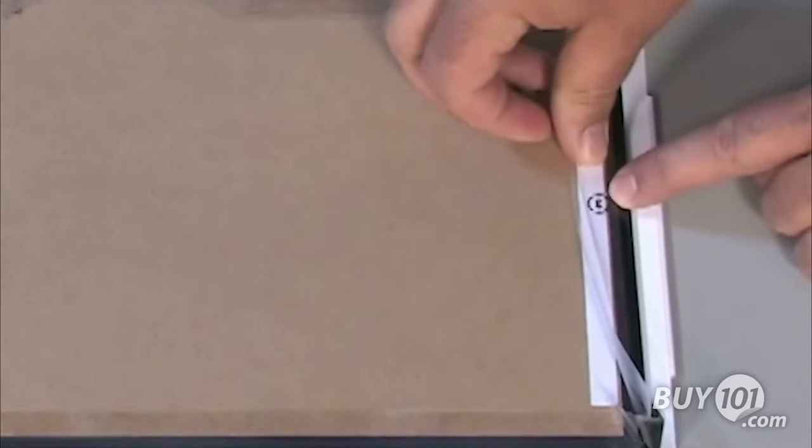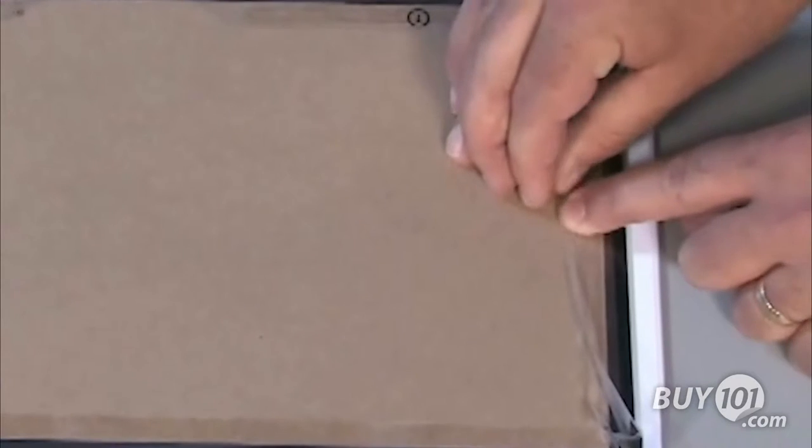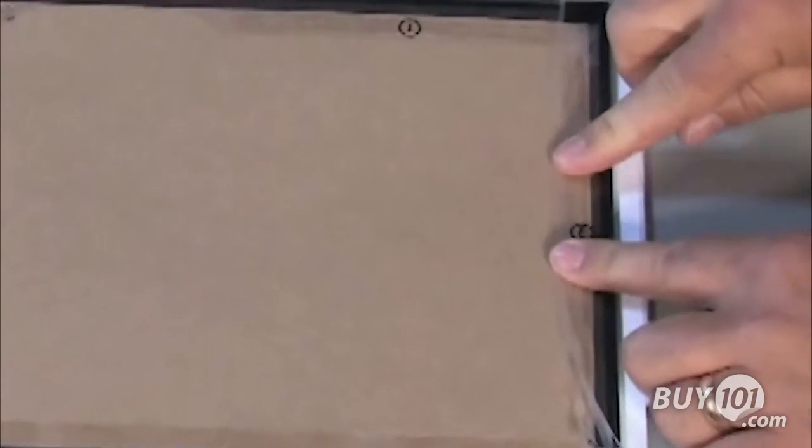Peel off the white strip next to flap 3. Fold in the two corner flaps labeled 2 along the dashed lines. Then press flap 3 down into the adhesive strip, working from the center outwards to fully adhere the flap.